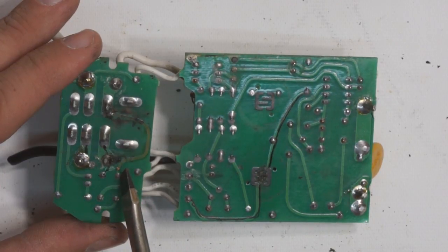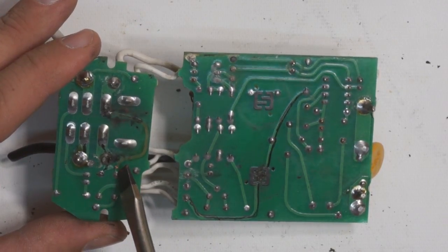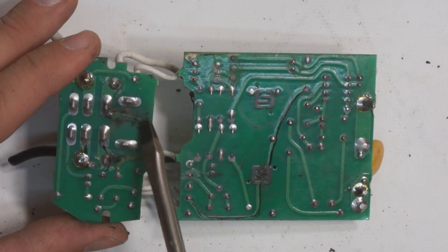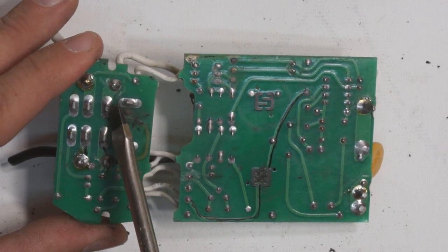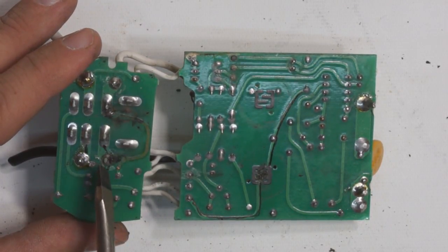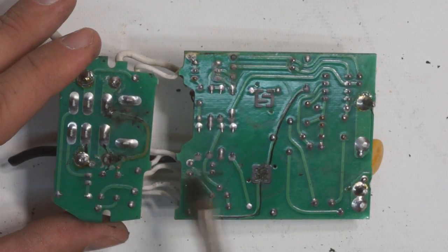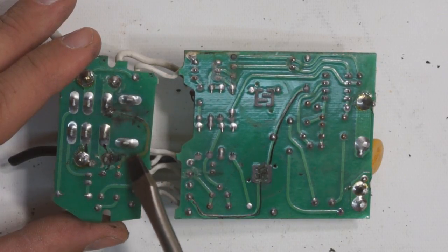So this little trace here which is the other side of that bridge rectifier goes all the way over to this side which is the neutral input. So when water bridged from here to here it blew the trace right off.